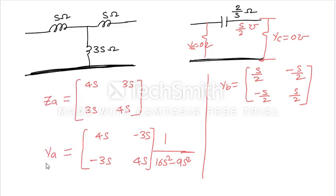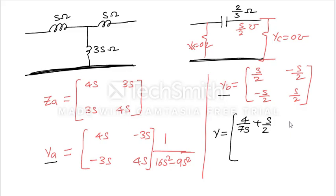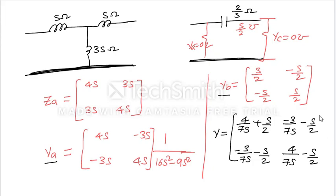From this we got Ya and Yb. The overall Y-matrix is the sum of these two. The denominator is 7s squared. So we get: 4/(7s) plus s/2, and minus 3/(7s) minus s/2, and minus 3/(7s) minus s/2, and 4/(7s) plus s/2. These are the overall Y-matrix entries we get for this type of arrangement.